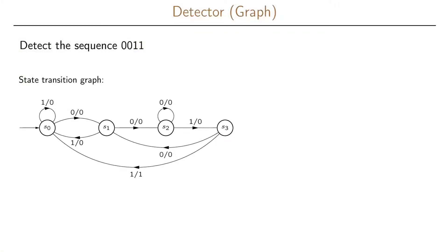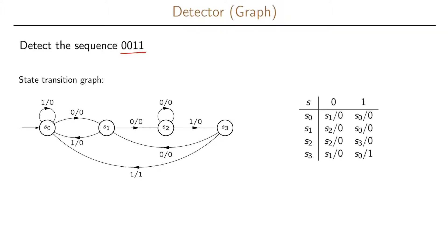We're going to focus on the problem of state assignment. This means that when we have a set of states we need to assign them some binary representation using zeros and ones. The example we're going to look at is our detector, which is used to detect the sequence 0011, and when it detects the sequence it will output a 1. The first thing we typically do is write the state transition table and find a minimal graph. Assuming we have a minimal graph, the next step is to do a state assignment.